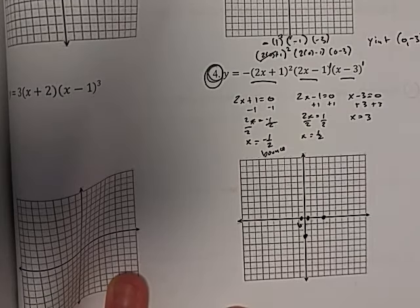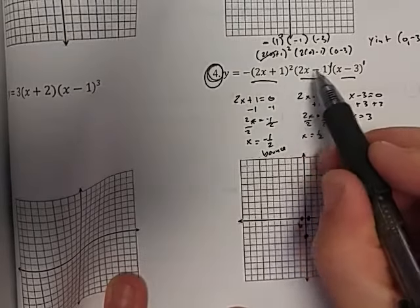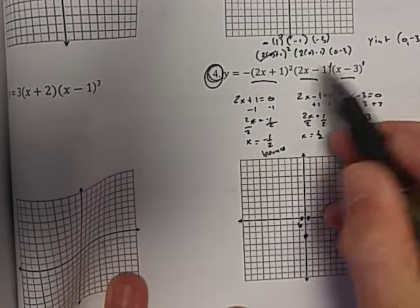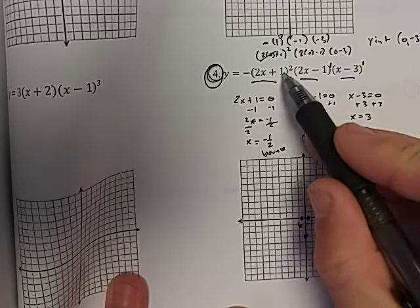The only other thing I need to figure out is my end behavior. End behavior is based on the degree of the whole polynomial, not just the degree of each factor, which we call the multiplicity, but the degree of the whole polynomial. So to find that, we add up all the multiplicities.